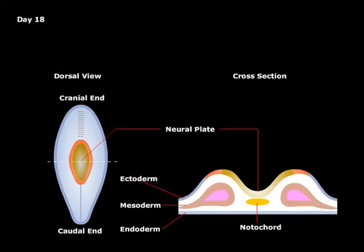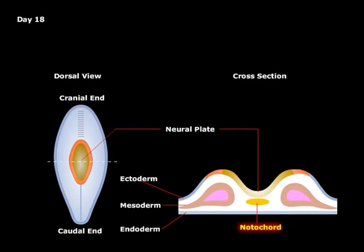By day 18 of fetal development, the ectodermal germ layer has the shape of a disc with a cranial and caudal end. The cross section on the right illustrates three germ layers: the ectoderm, mesoderm, and endoderm. At this point, the central notochord has induced the overlying ectoderm to thicken and form the neural plate.